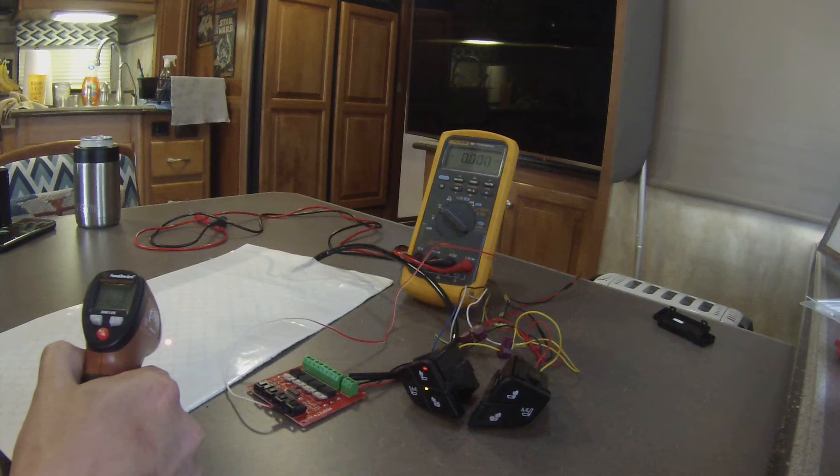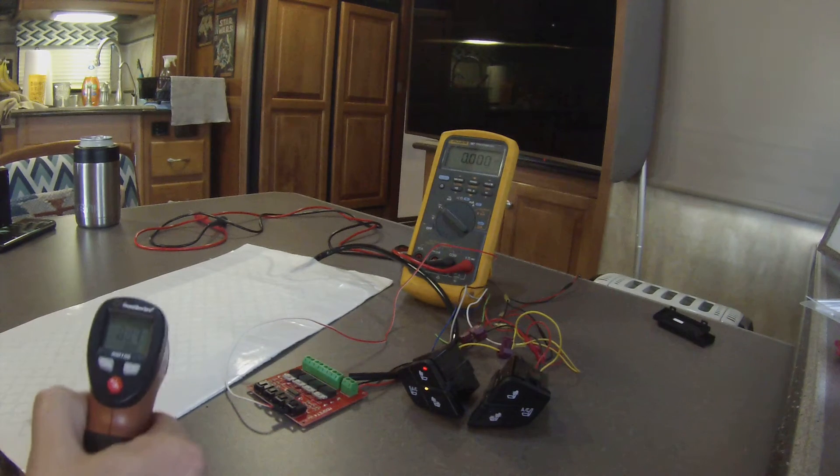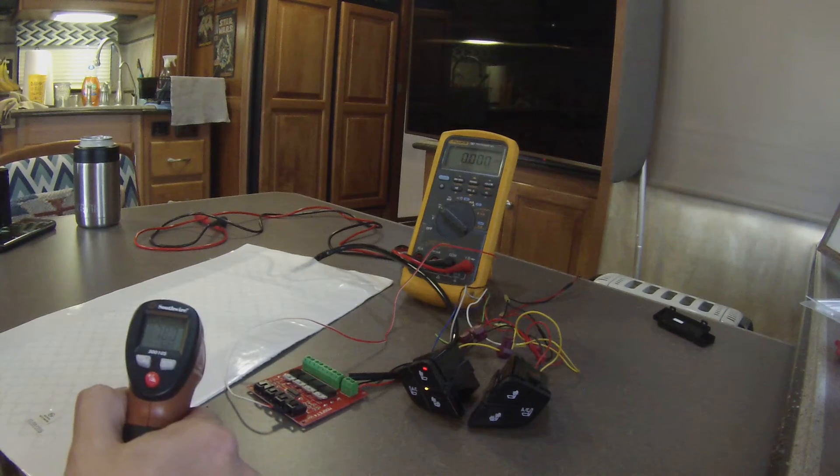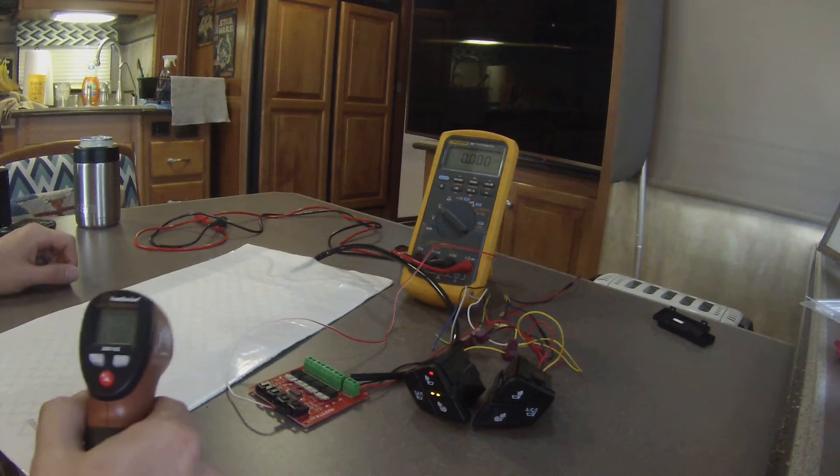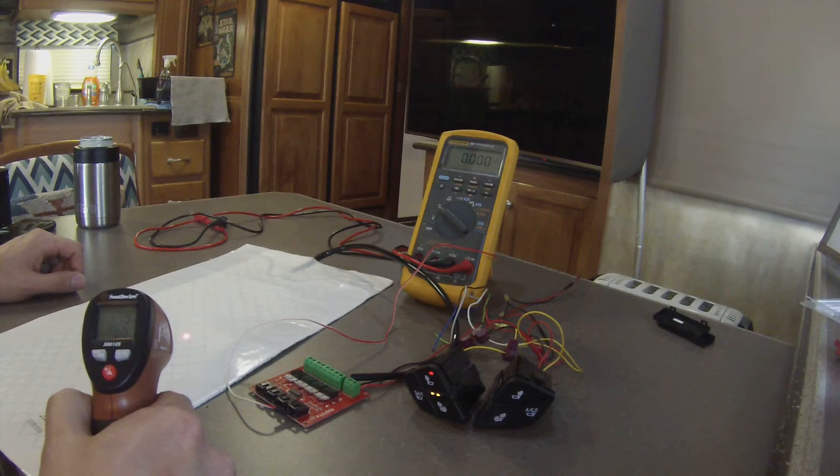Honestly, low doesn't get super hot. You wouldn't know, especially because it's probably 75 in here. So if it were 40 degrees out, low would be a lot warmer. But as it is right now, 80 degrees is fairly decent. So let's go ahead and jump up to medium now.